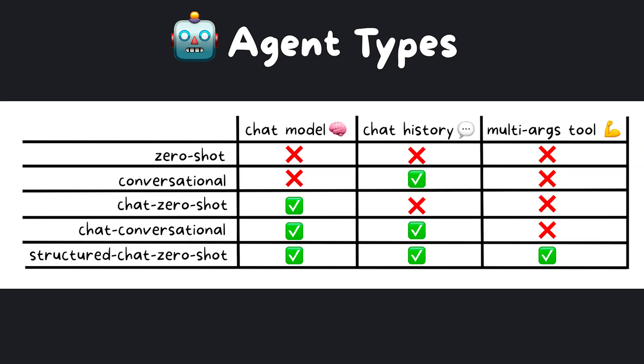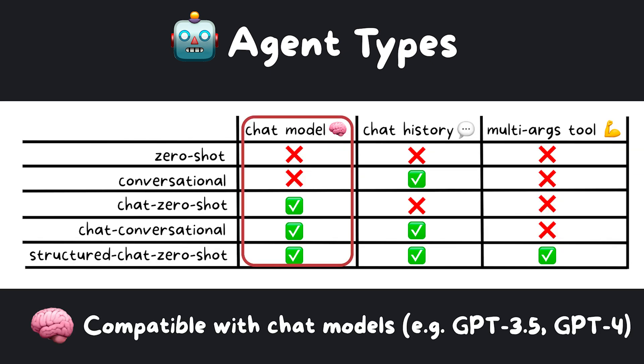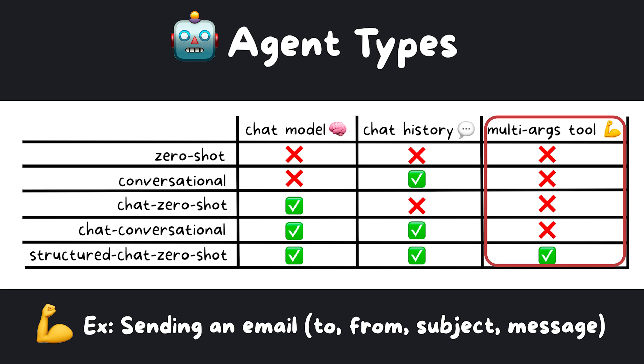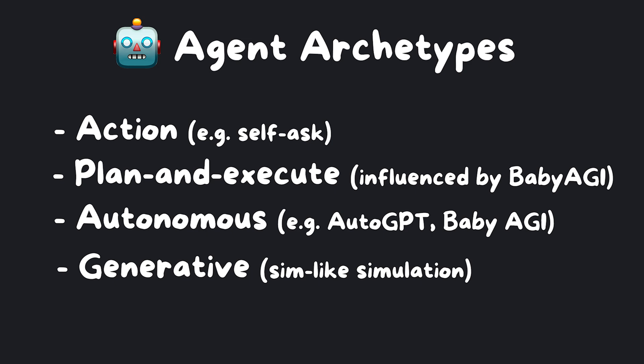The other agent types ending with ReAct description are similar but with subtle differences. Chat agents are compatible with the chat messages API needed to use GPT-3.5 and GPT-4. Conversational agents store the conversation in memory to pass context over to future iterations. Out of all of them, only one supports tools that accept multiple inputs.